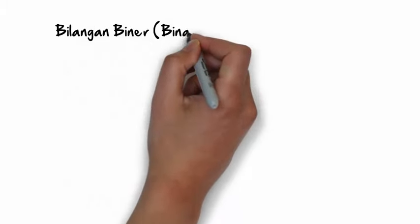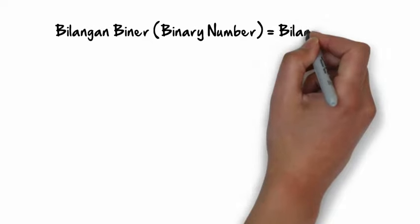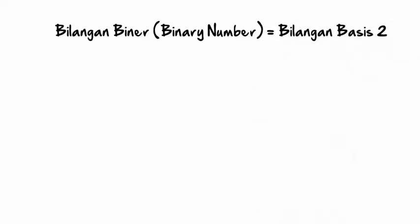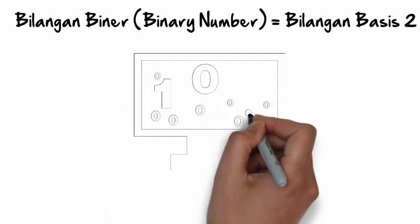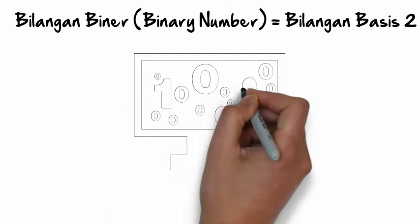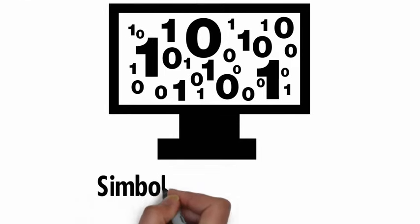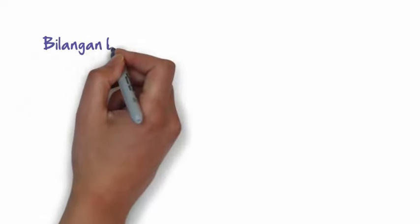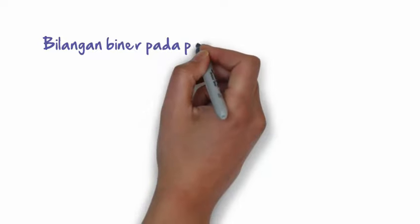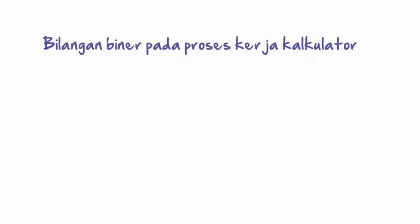The binary system is a system of writing with 2 symbols, yaitu 0 dan 1. This is the root of all digital systems.